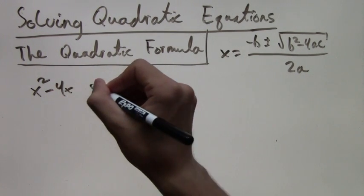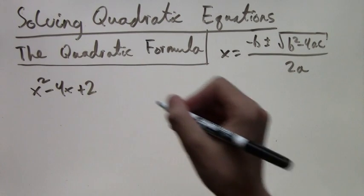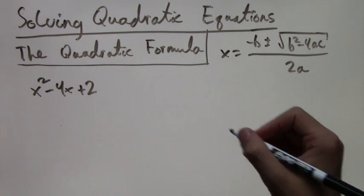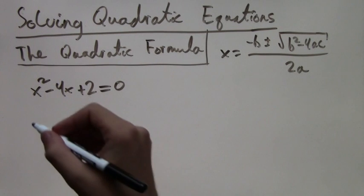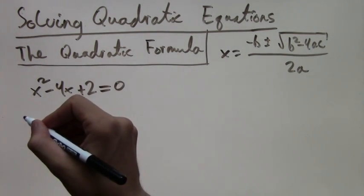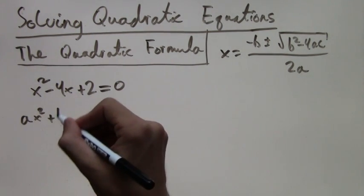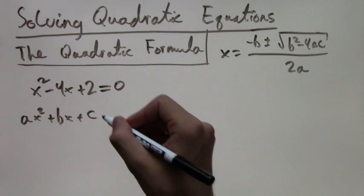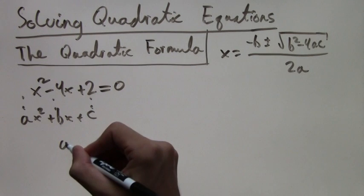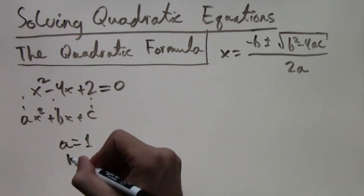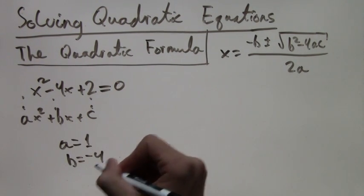For example, x squared minus 4x plus 2 equals zero. So we have to figure out what a, b, and c are. Well, if it's ax squared plus bx plus c, we sort of drop down the corresponding values. A just equals 1, b is negative 4, and c is 2.